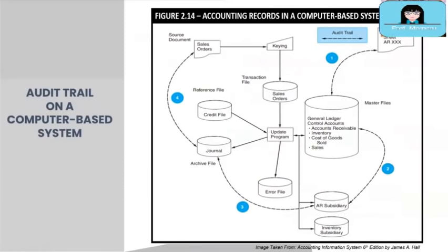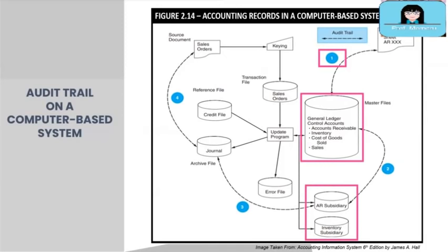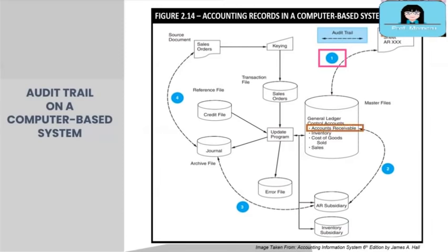Now let us illustrate the audit trail in a computer-based system using vouching, from the financial statements to supporting documents. The diagram on the screen shows the accounting records in a computer-based accounting system. If you need to verify balances of ledger accounts presented on the balance sheet, you have to examine the general ledger and subsidiary ledger master files. For example, to audit accounts receivable shown on the financial statements, you need to examine the AR general ledger master file and AR subsidiary master file.